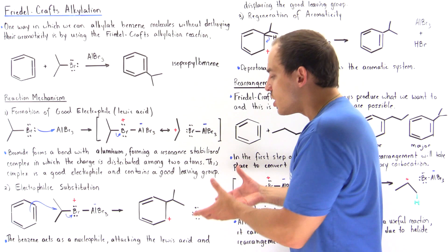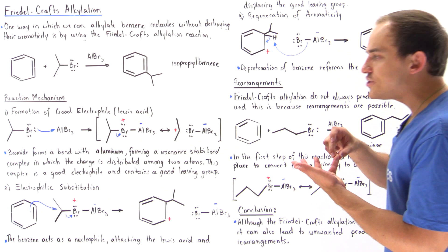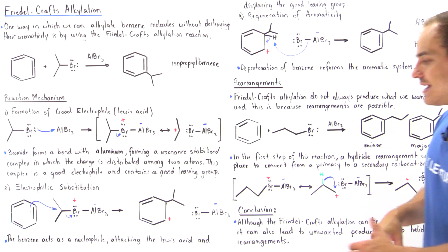Notice that when we go from benzene to this intermediate, we lose aromaticity — our benzene no longer has its aromatic character. In step three, we want to regenerate our catalyst and reform aromaticity.